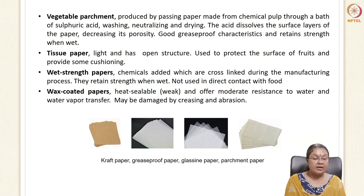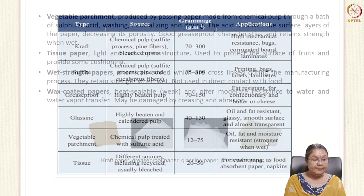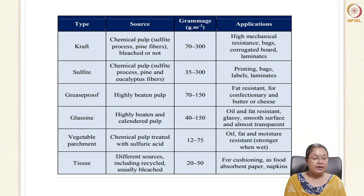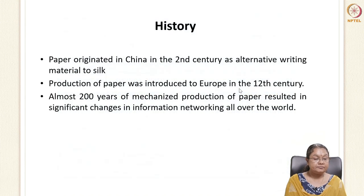Wax coated paper is heat-sealable, but the heat seal is very weak because the paper is coated with wax — the seal can be tampered and removed. It is moderately resistant to water and vapor but can be damaged by creasing and abrasions, as any scratches will remove the wax from the surface. A table shows different types of paper, their sources, grammages (weight in grams per square meter), and applications. Craft paper has a grammage of 70–300 g/m², sulfide paper 35–300 g/m², and grease proof paper 70–150 g/m².